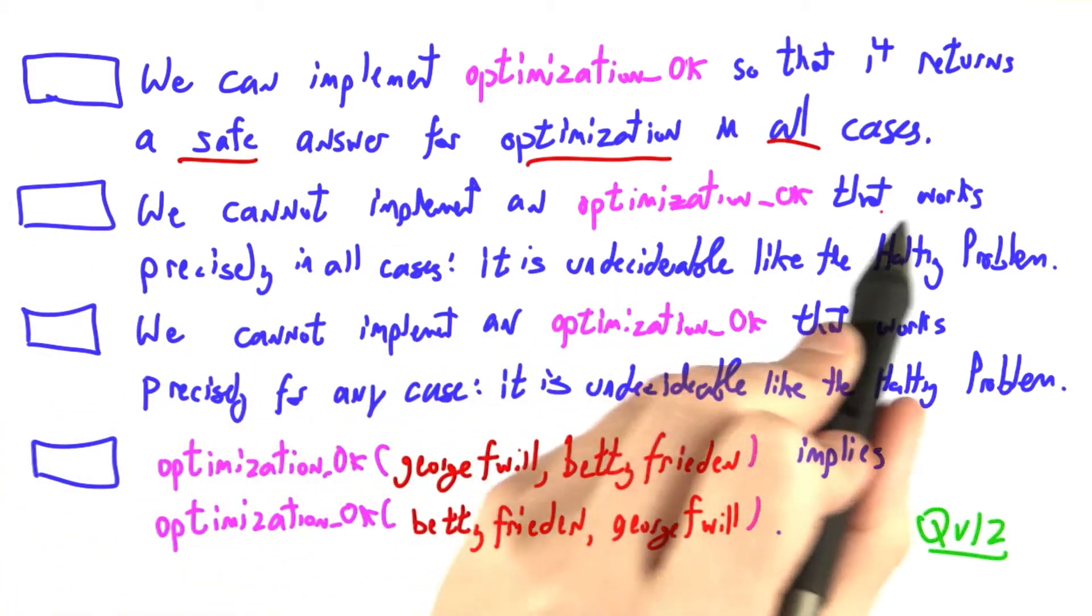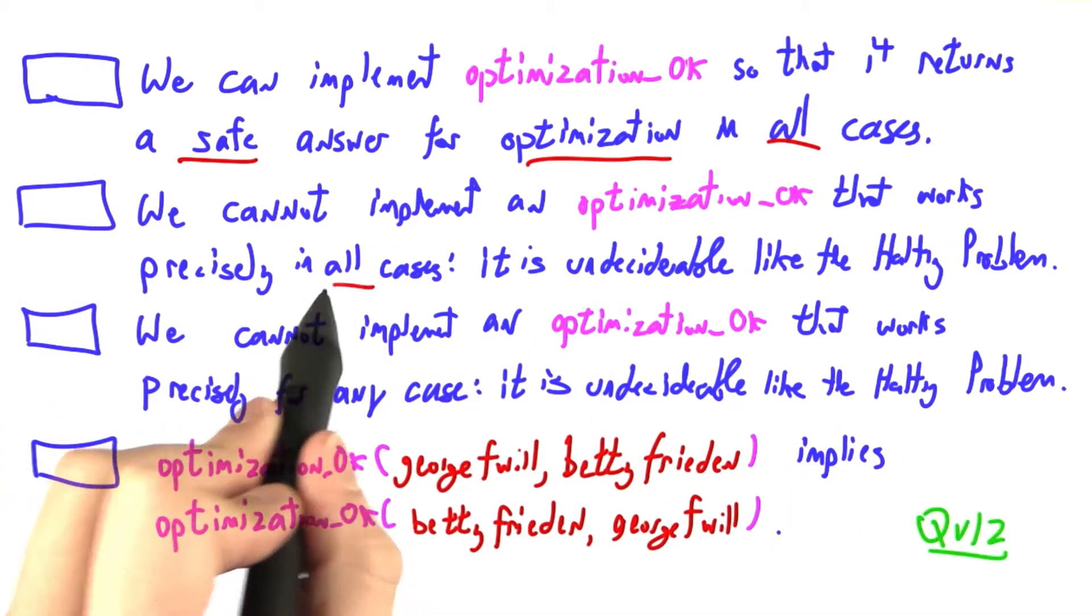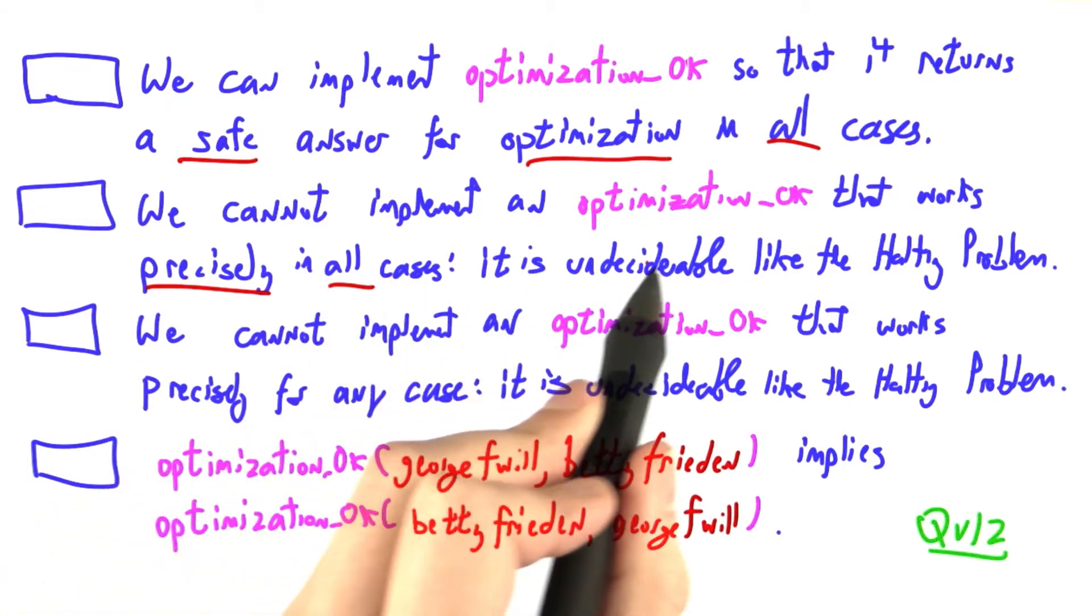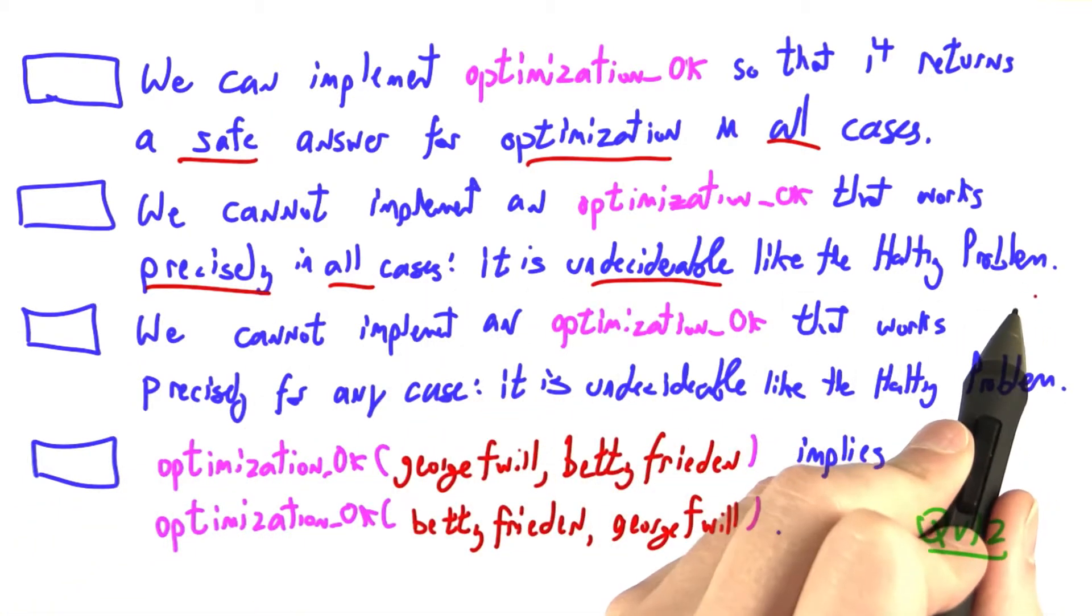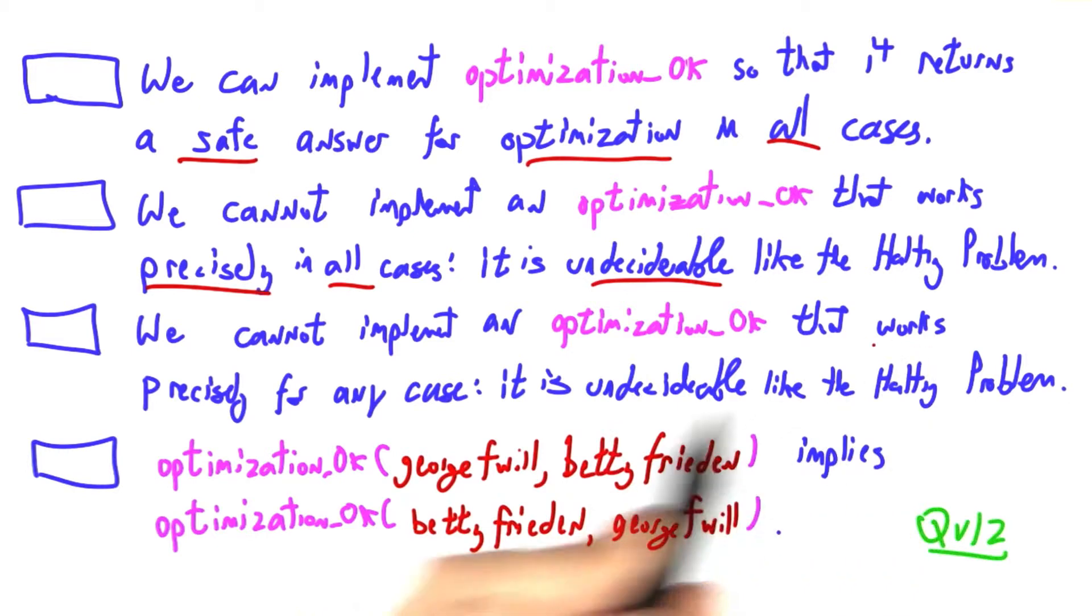We cannot implement an optimization_ok that works precisely in all cases: it is undecidable like the Halting Problem. We cannot implement an optimization_ok that works precisely for any case: it is undecidable like the Halting Problem.